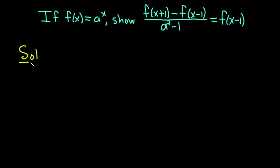Solution. So we'll just assume that f of x is equal to a to the x, and we'll start by writing down the left-hand side and just working through it. So we have f of x plus 1 minus f of x minus 1 over a squared minus 1. So this is left-hand side of what we're trying to show.